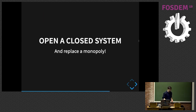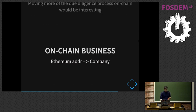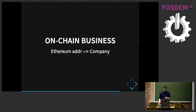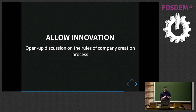How is it interesting? First of all, it's opening a closed system — which is most of what other similar blockchain projects do — replacing the monopoly of Gref notably. It's making things more auditable and secure: as you move processes on-chain, you can audit and verify them. The verification process is something we can think about moving more on-chain. It allows doing on-chain business because I'm mapping Ethereum addresses to companies. It also opens up the discussion about how the process of incorporating a company works — and that's where it relates most to open source values.